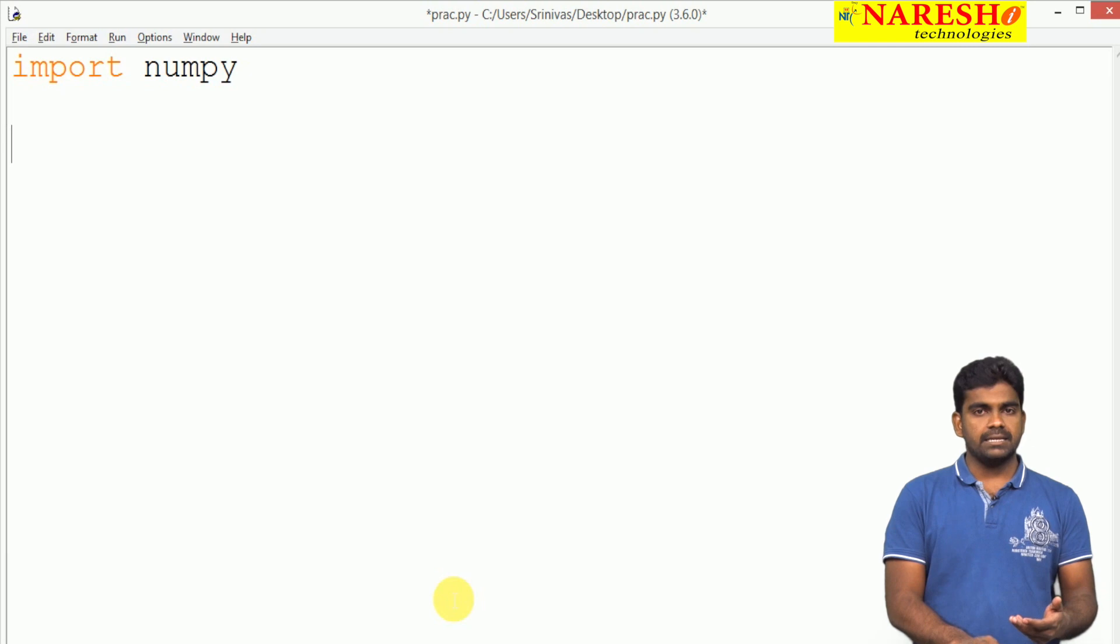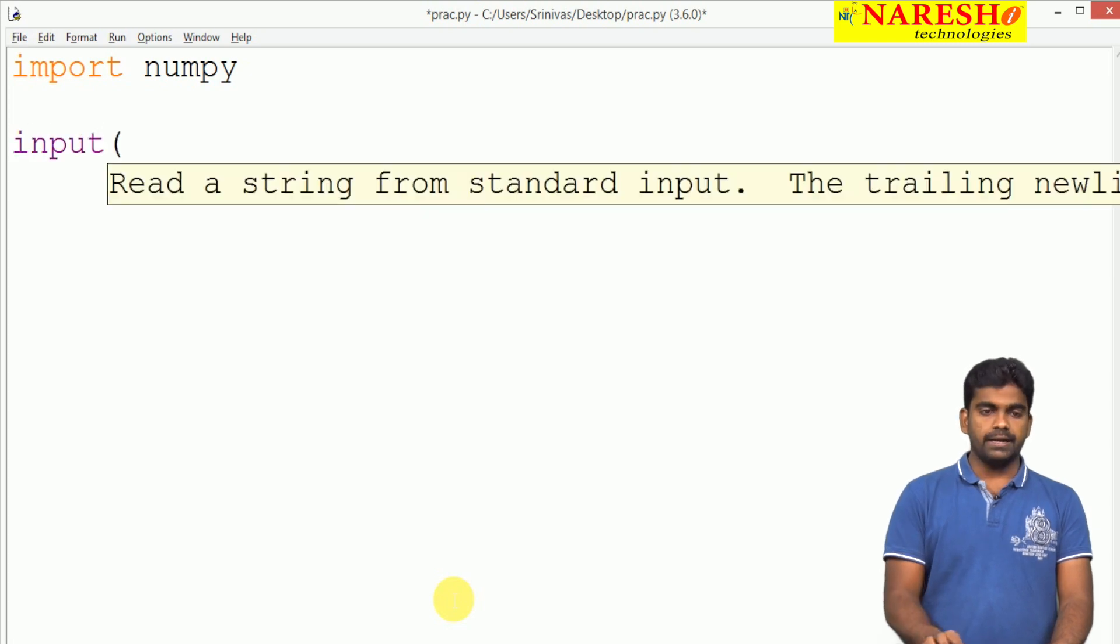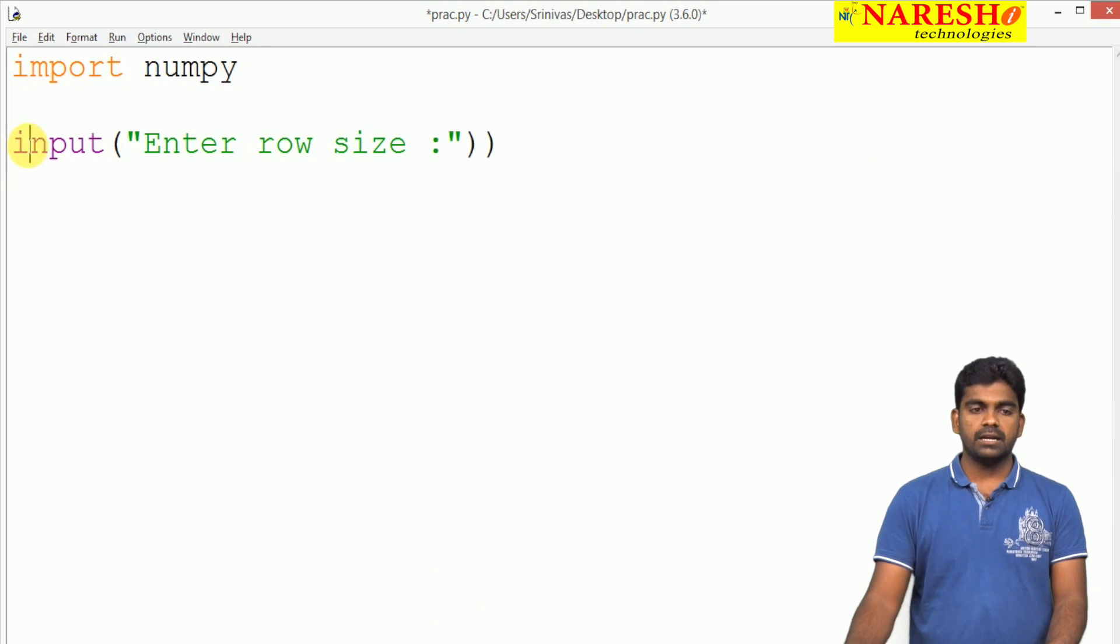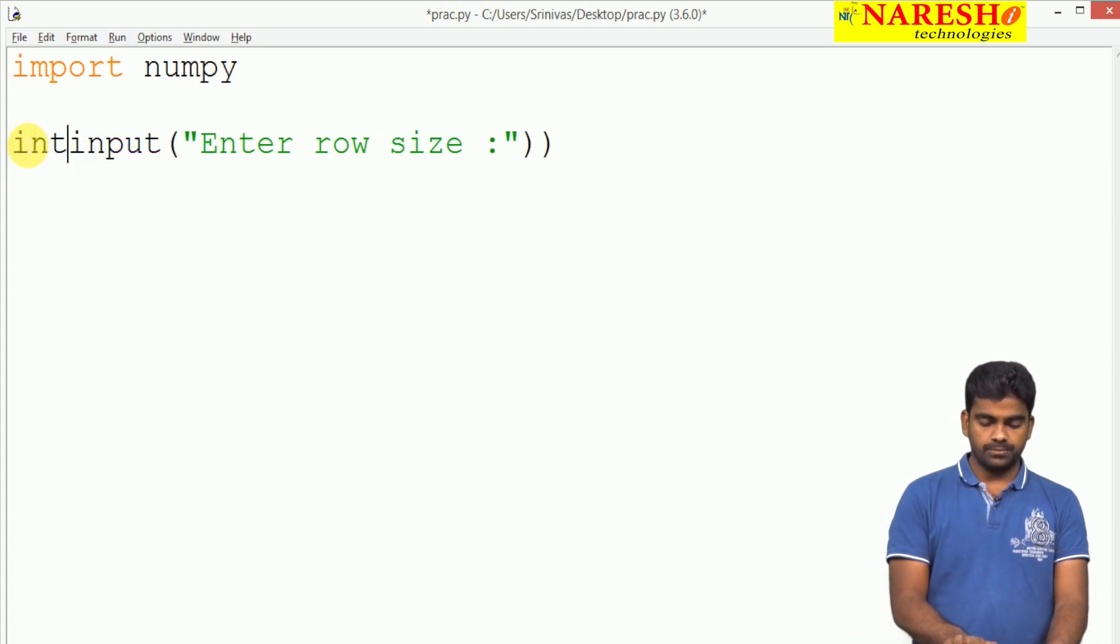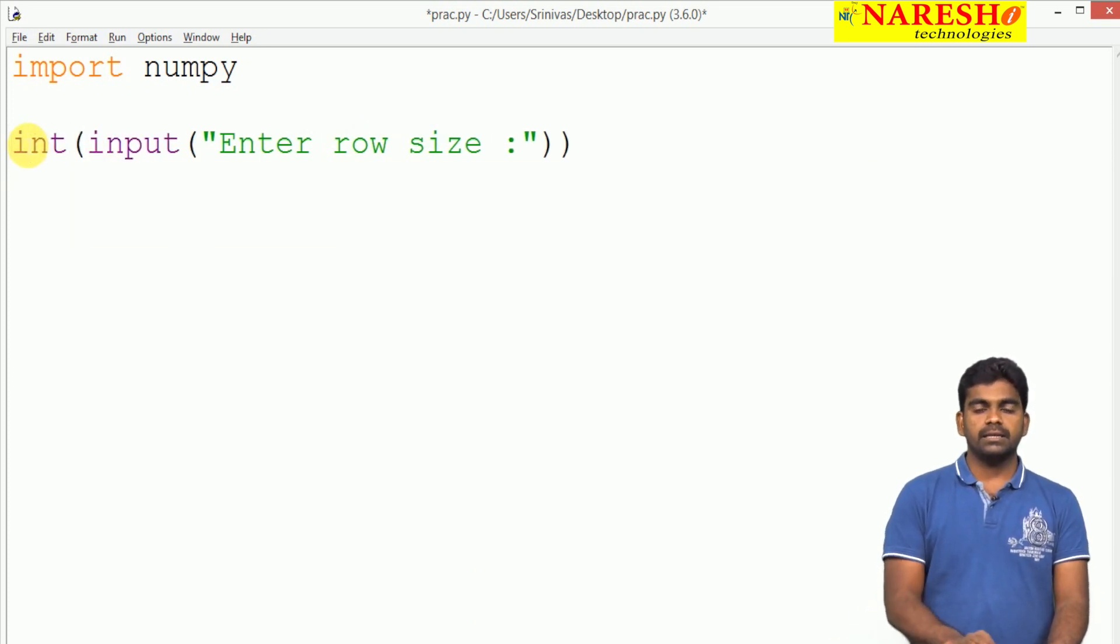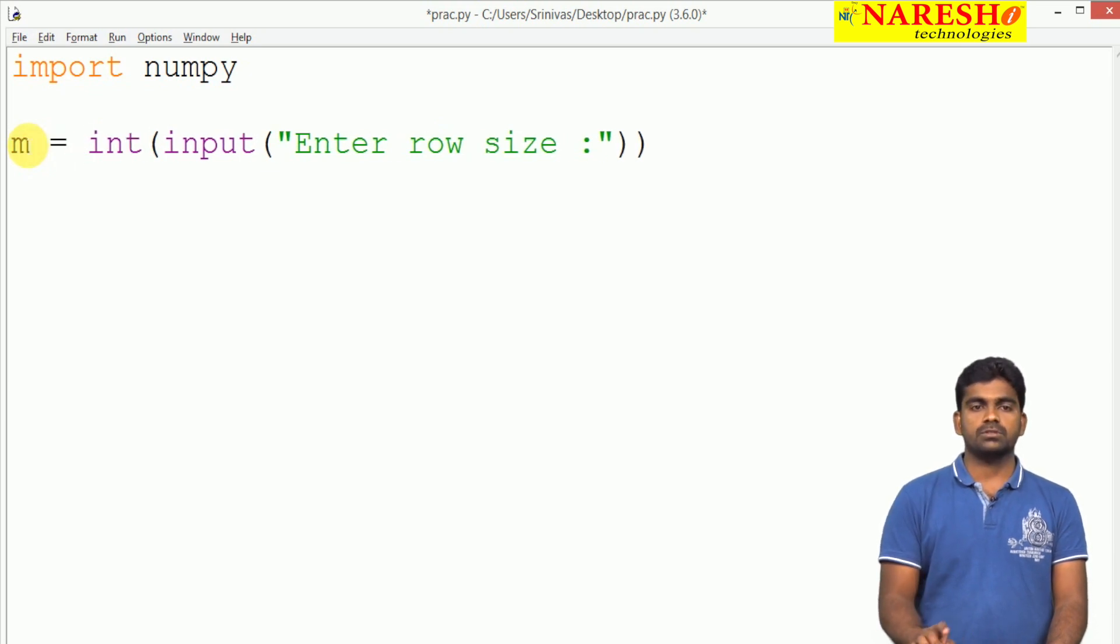What is the dimension - rows and columns? Here we use input 'enter row size', convert it to integer, and collect it into m, which is the number of rows.